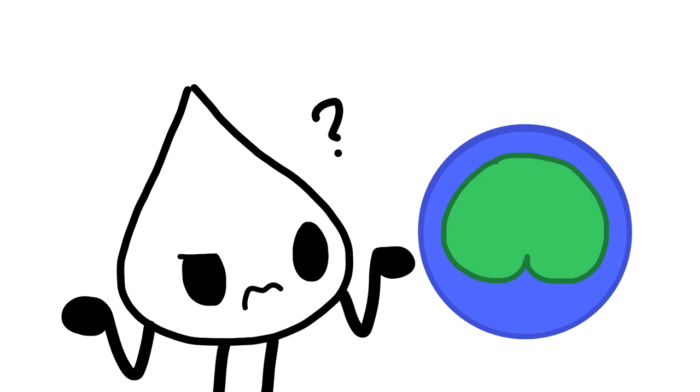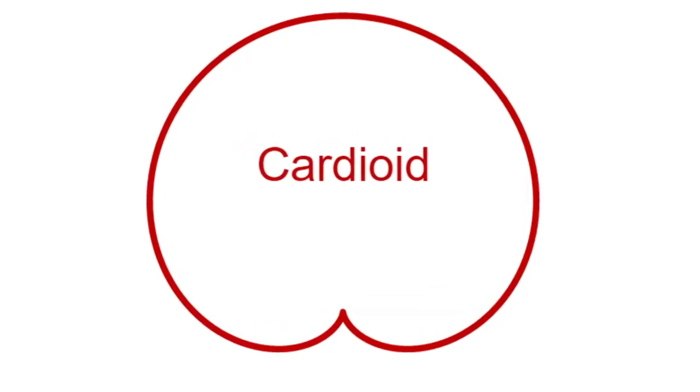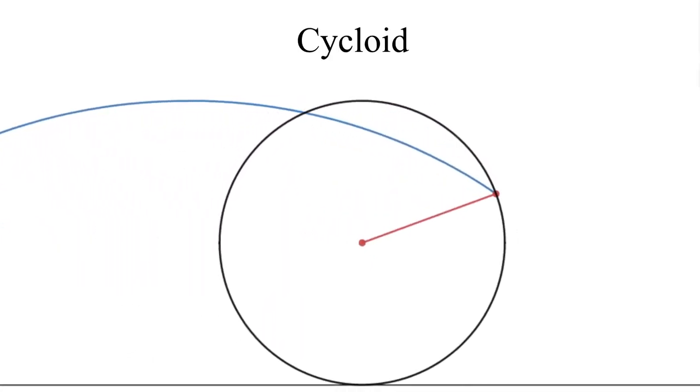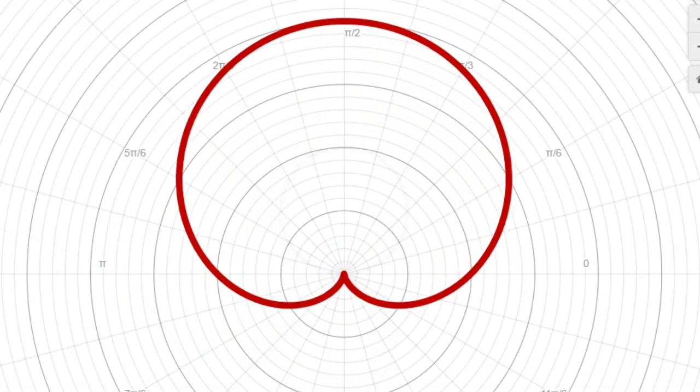What in the world is a cardioid? Well, if you've heard cardio from the word, then it should appear to you that the curve is shaped like a heart. How this curve is drawn is similar to drawing a cycloid, but instead of rolling a circle on a line, we roll a circle on another circle and trace.